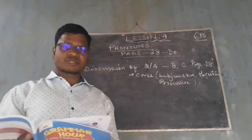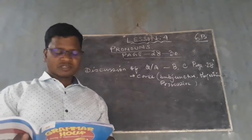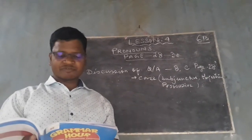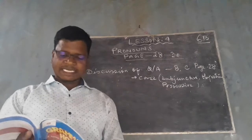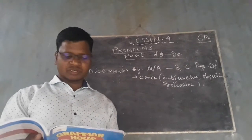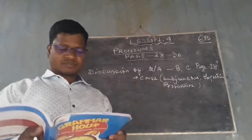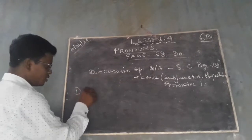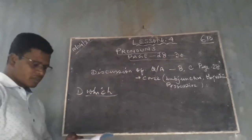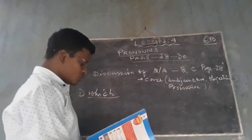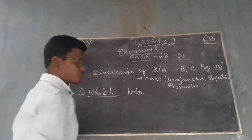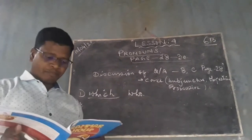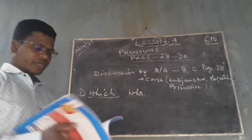For the first one, you see it's interrogative, then it's the girl again — that's relative — who swims fast. So what is to be placed here? The answer is 'which.' Which is the girl who swims fast? Next one: she has money — that's a personal pronoun.